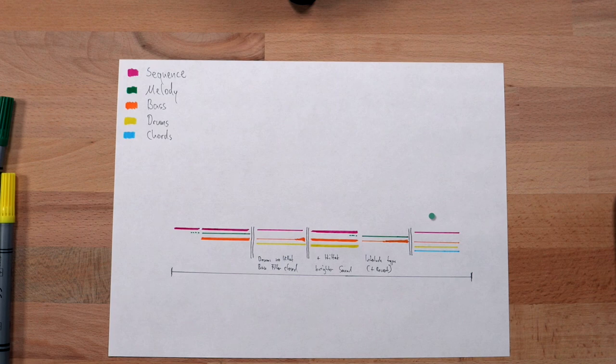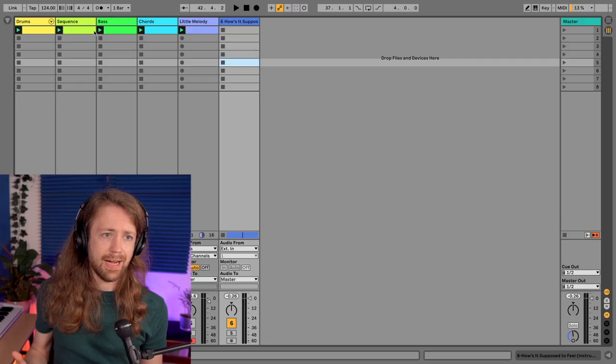Now all you need to do is copy this to your DAW — you just have to match the colors you used for your visualization to the tracks inside your DAW, which is great because DAWs are so color-dominated. Then you just arrange it in the same way.